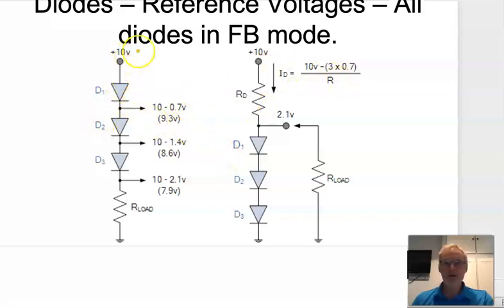We can build voltage references like this, where we've strung three diodes together. We've applied 10 volts there and we've got a resistor at the bottom. When this is fully conducting, because this is a large voltage—10 volts—we can say that this point here is always going to be larger than this point.